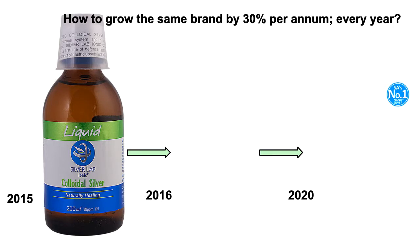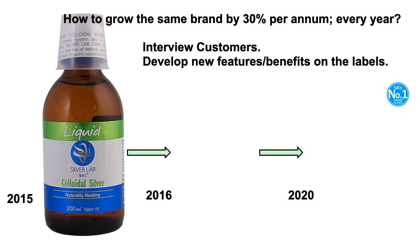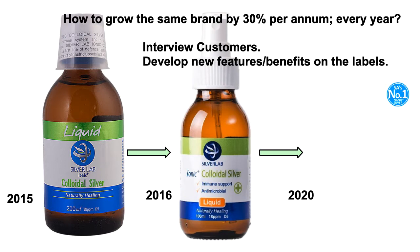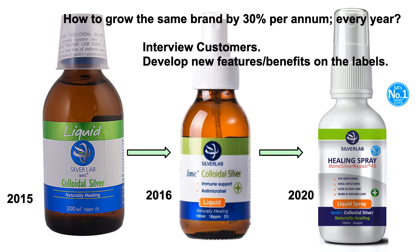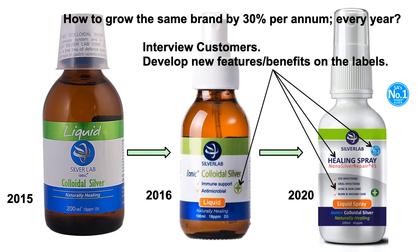How do you grow a brand? This is a case of a product in Clicks and Dischem that was struggling in 2015. All we had to do to make this brand grow by 30% per annum for five years in a row was interview customers and develop new features and benefits just on the label. You can see here in 2015 to 2016, the new label — that's what customers wanted. And then four years later, another label was developed and launched, with many new benefits. This brand became the number one brand in South Africa, so we put the number one stamp of approval on it.